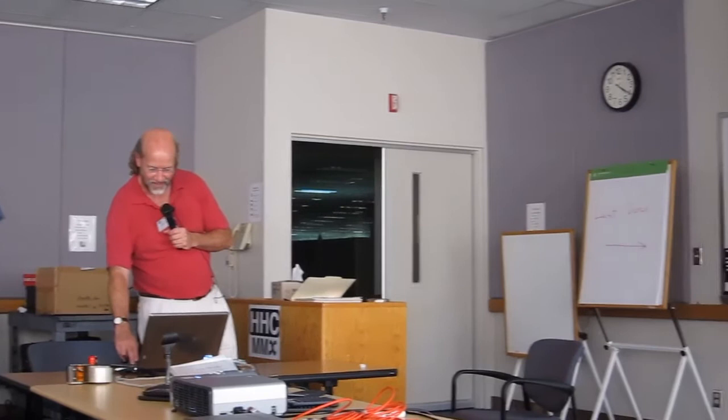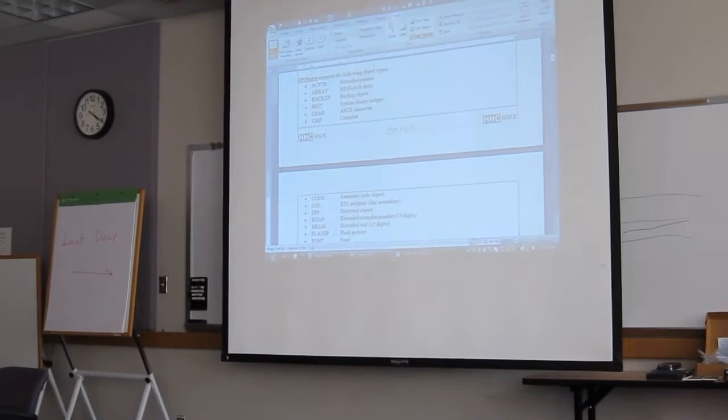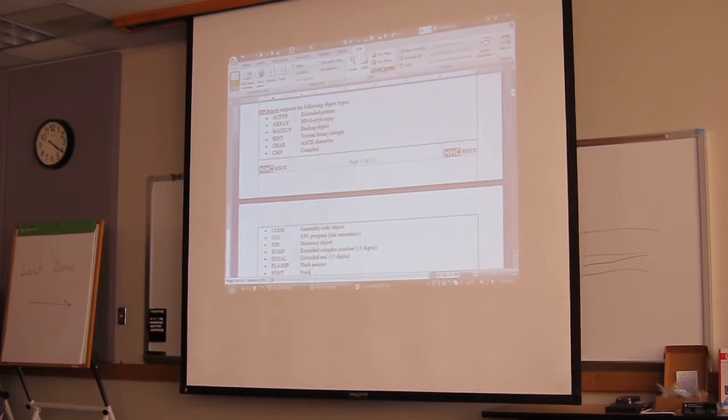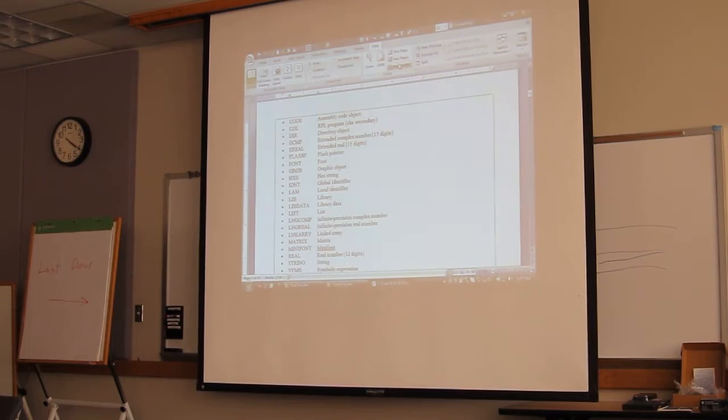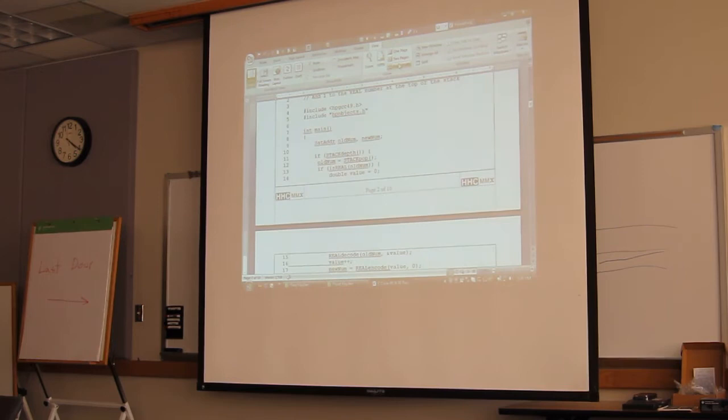The object types that it handles, and these are all from the names from the document on, I think it's called Intro to Saturn Assembly Language Programming, but essentially it's all pointers, arrays, backups, binary integers, character complex, code, directories, on and on and on.